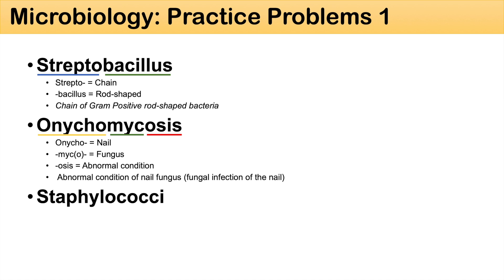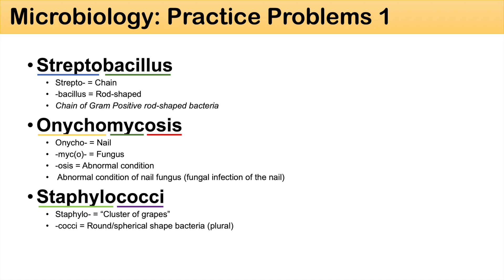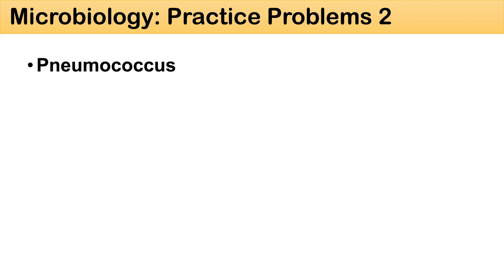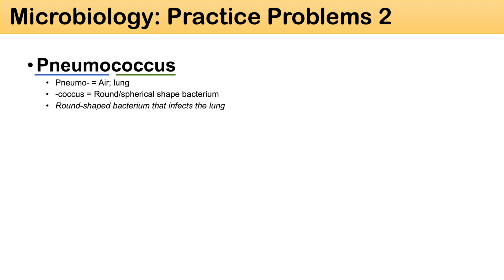Next is staphylococci — staphylo means a cluster of grapes, and cocci is the plural of coccus, which means round or spherical-shaped bacteria. So staphylococci means round or spherical gram-positive bacteria grouped in clusters, which is exactly what you see under the microscope after a gram stain. Then pneumococcus — pneumo means air or lung, and coccus means round spherical-shaped bacterium. So pneumococcus means a round-shaped bacterium that infects the lung.